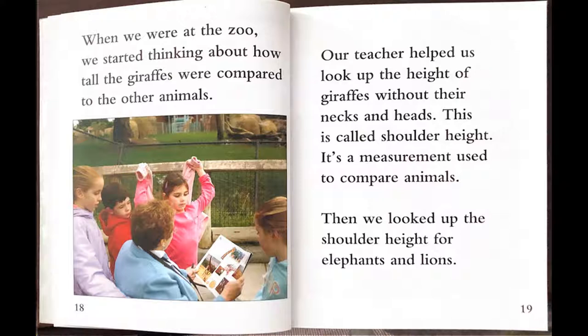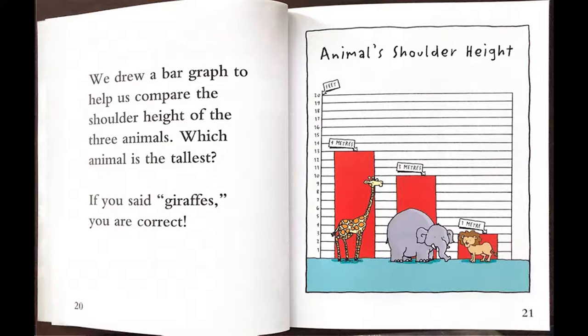When we were at the zoo, we started thinking about how tall giraffes were compared to the other animals. Our teacher helped us look up the height of giraffes without their necks and heads. This is called shoulder height — a measurement used to compare animals. Then we looked up the shoulder height for elephants and lions. We drew a bar graph to help us compare the shoulder height of the three animals. Which animal is the tallest? If you said giraffes, you are correct.